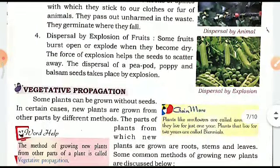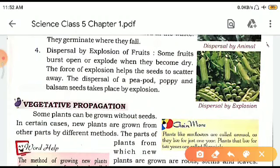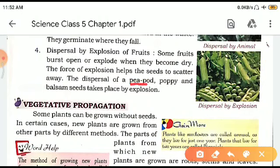Last but not the least is dispersal by explosion of fruit. Sometimes when fruits are not plucked for a long time, they burst on their own and the seeds inside scatter all around. Examples of such plants are peapod (मटर), poppy, and balsam — these burst on their own and the seeds scatter in all directions, causing the formation of newer plants.